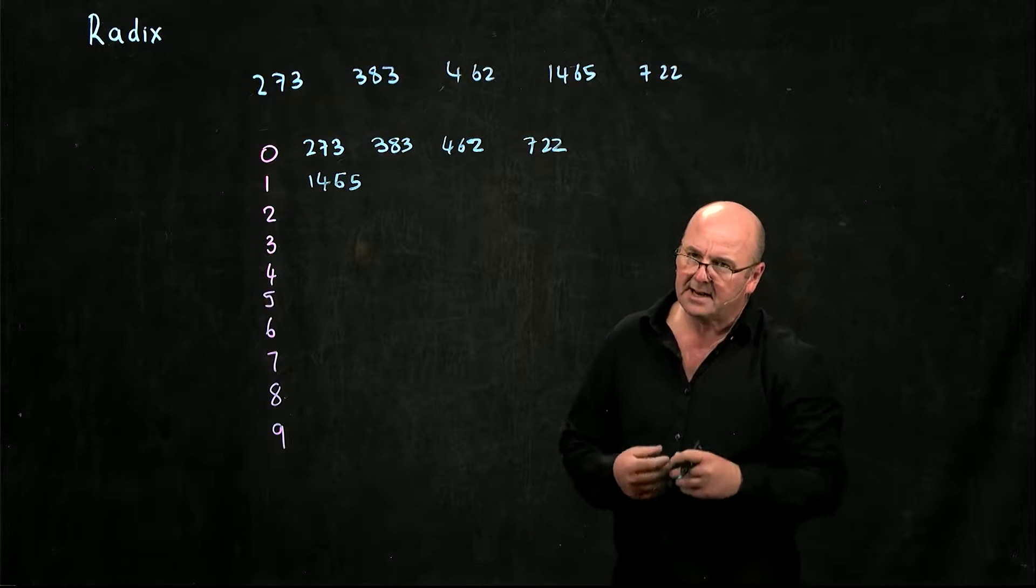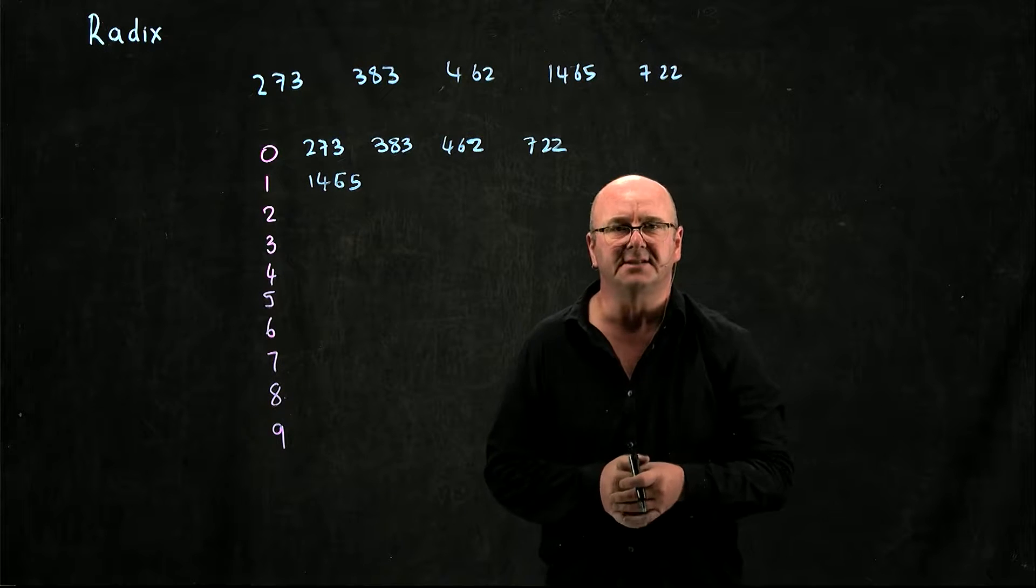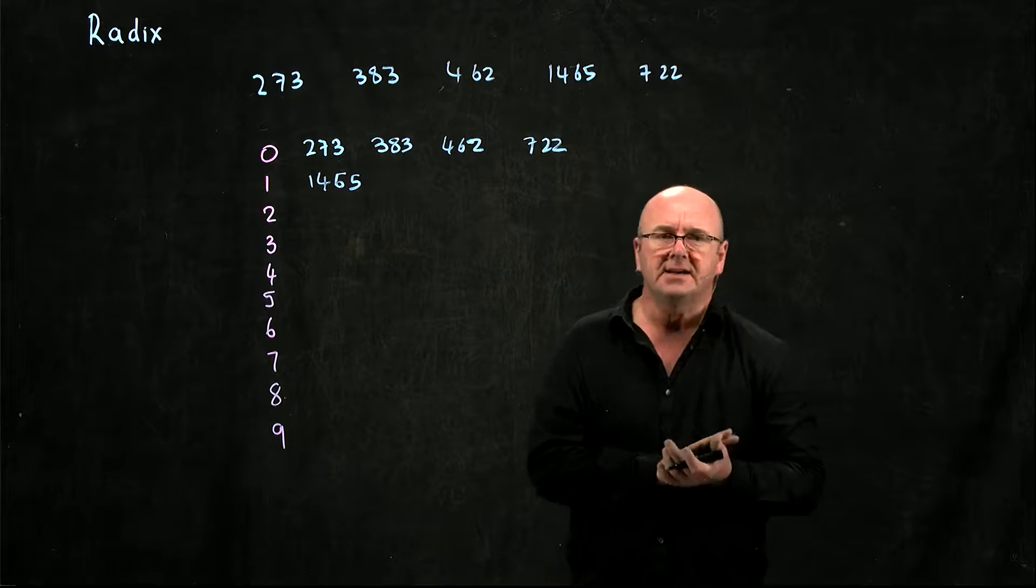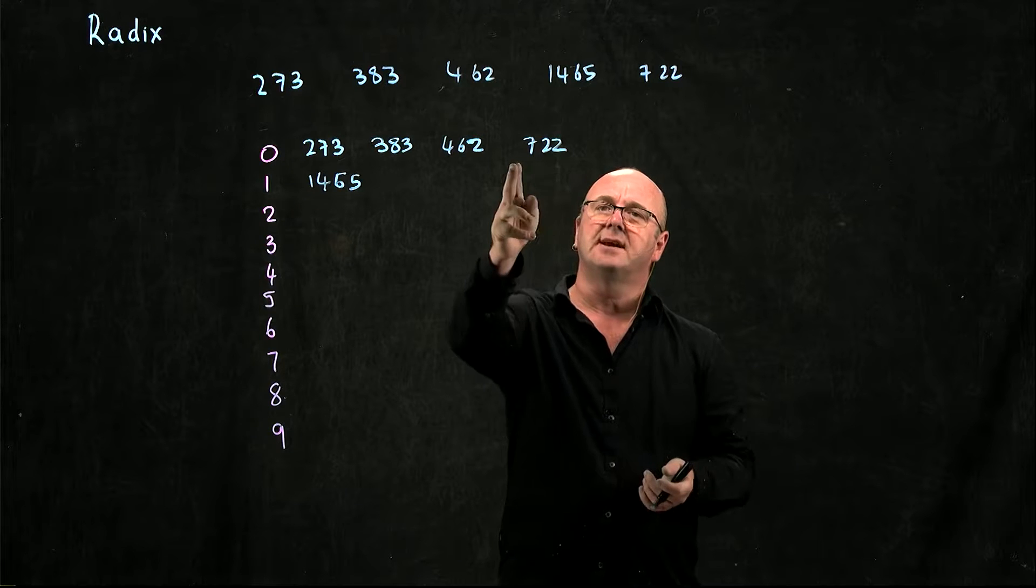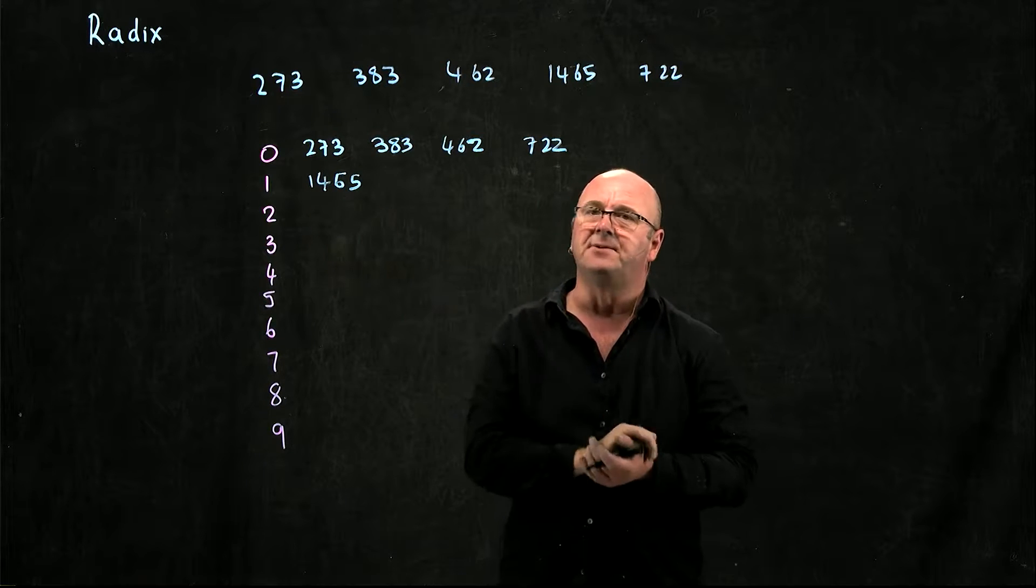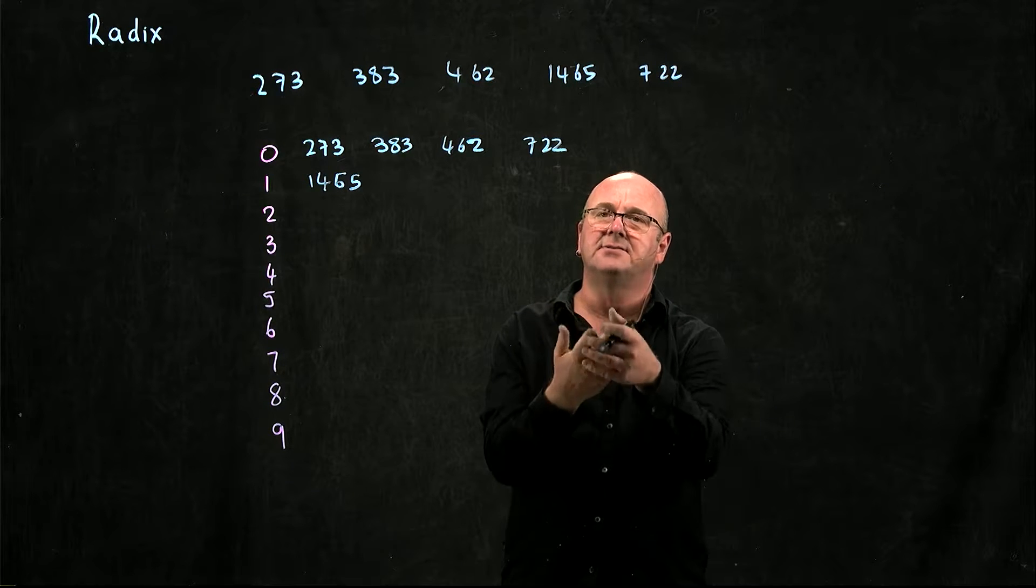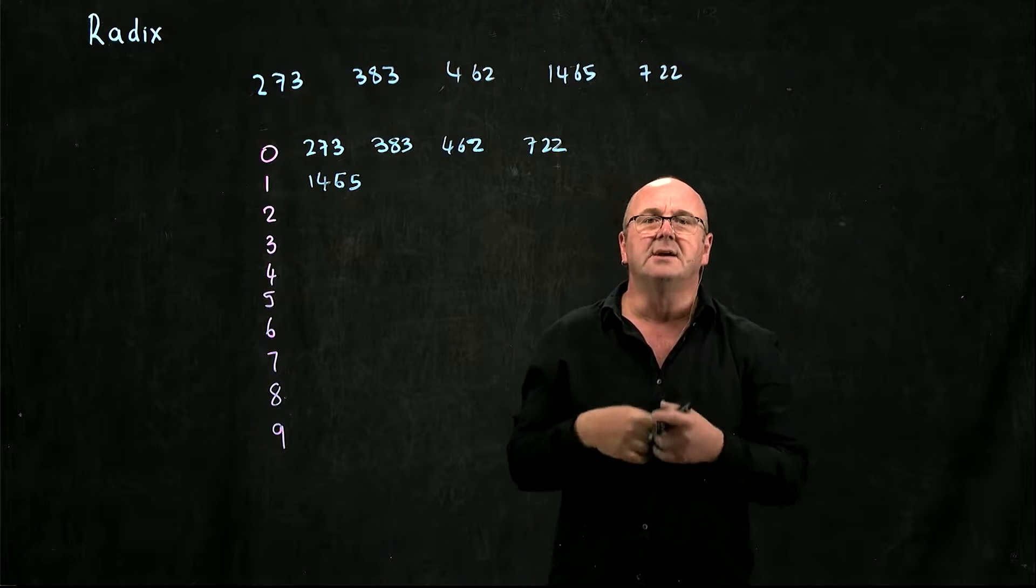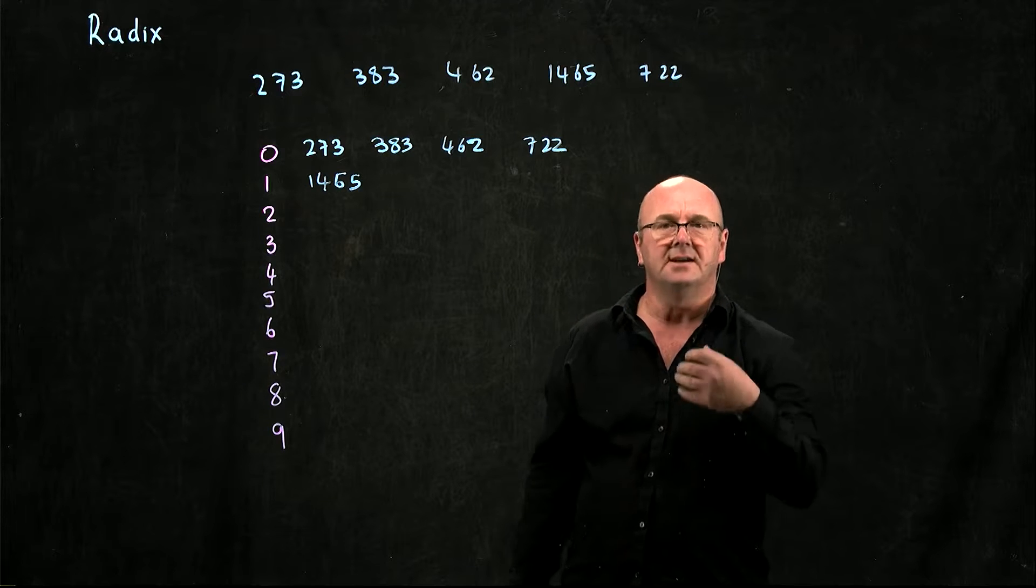So what's the complexity of this search? The complexity of the radix sort is just based on the length of the numbers. In this case, it's 4n. We looked at the zeros, the tens, the hundreds, and the thousands. So in theory, this should be a super quick way to search things. It's n complexity.